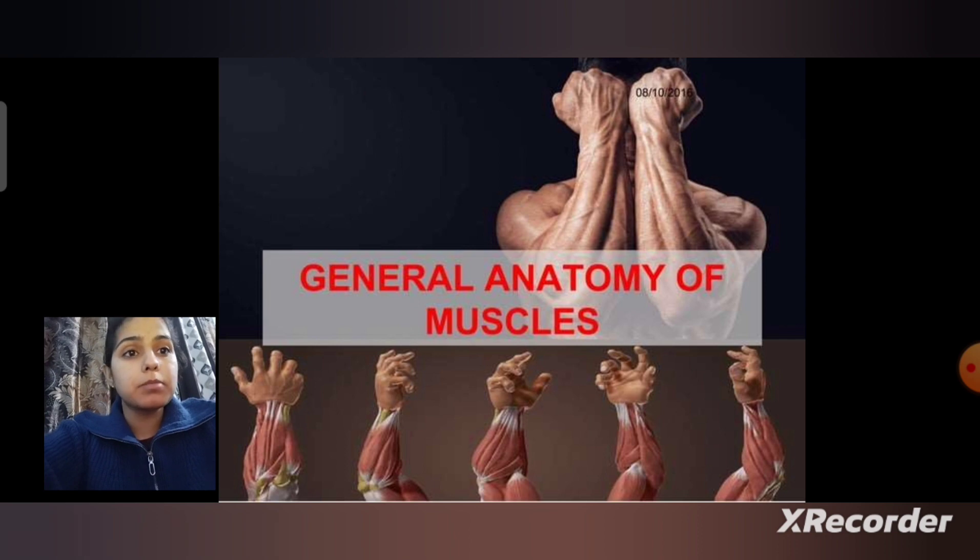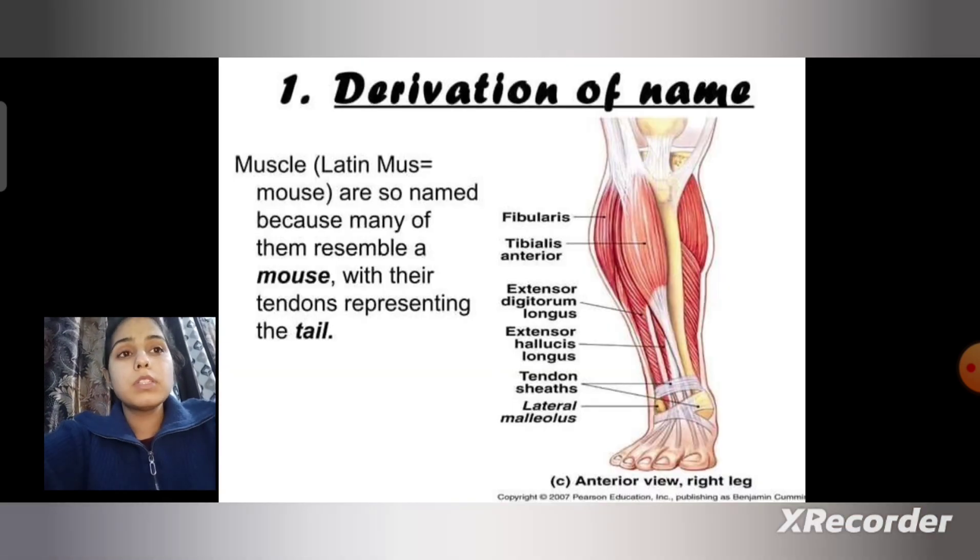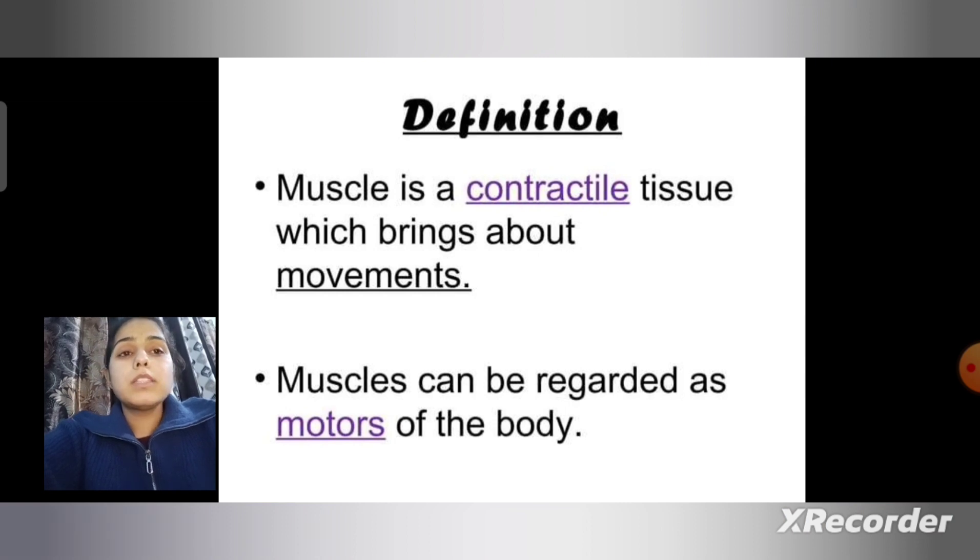First is derivation of the name of muscle. Muscles come from the Latin word mus, which is mouse, and are so named because many of them resemble a mouse with their tendons representing the tail. Next is definition.